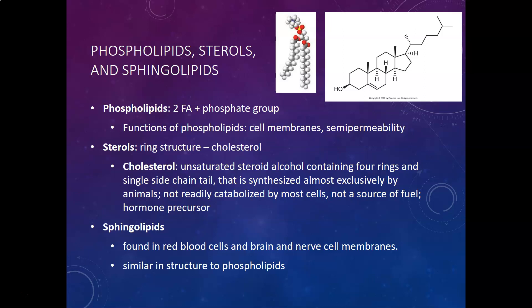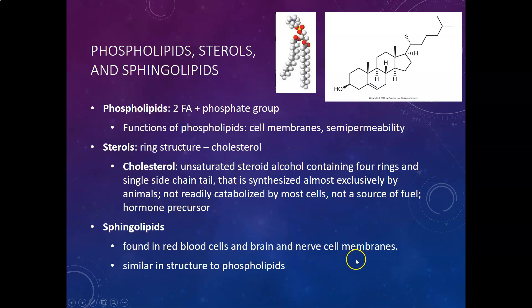Lastly, sphingolipids are found in red cells and brain and nerve cell membranes. They have a very similar structure to phospholipids. And that is your lesson on lipids — thank you.